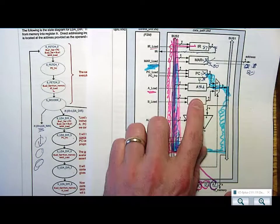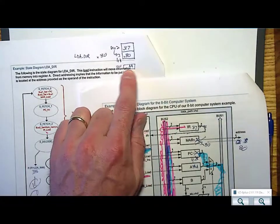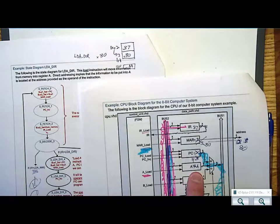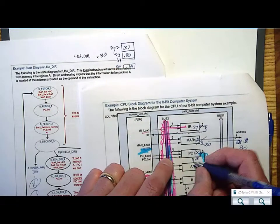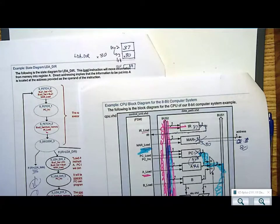You know what's awesome about this? I have now gone out to memory. I have grabbed information that was located at address 80. It now resides in register A, and the program counter is pointing to the next instruction in memory.